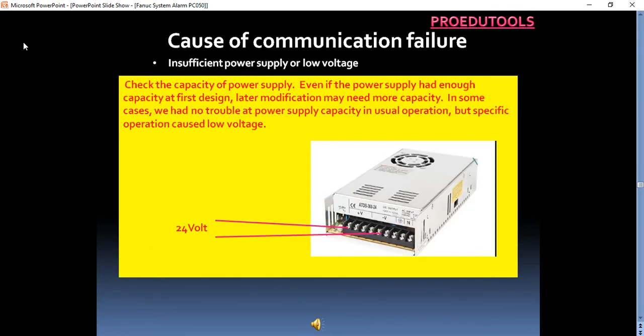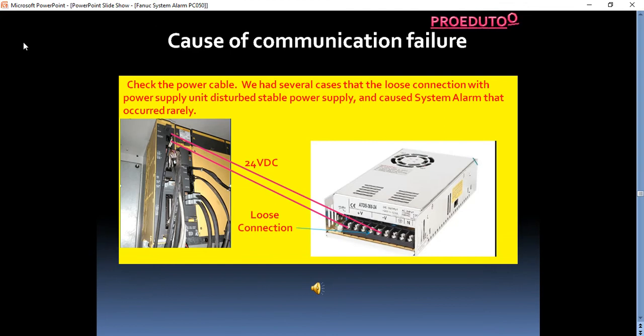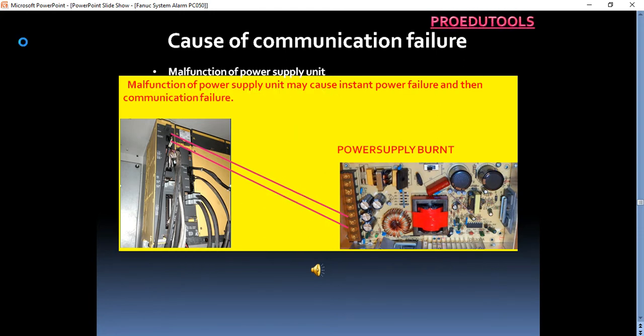Insufficient power supply or low voltage. Check the capacity of power supply. Even if the power supply had enough capacity at first design, later modification may need more capacity. In some cases, we had no trouble at power supply capacity in usual operation, but specific operation caused low voltage. Insufficient connection to power supply, check the power cable. We had several cases that the loose connection with power supply unit disturbed stable power supply and caused system alarm that occurred rarely.